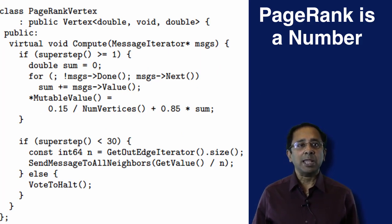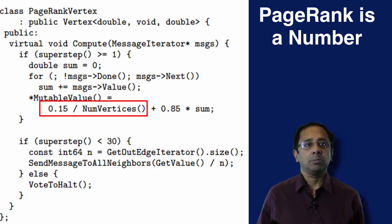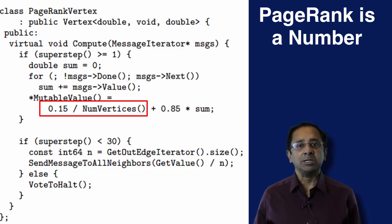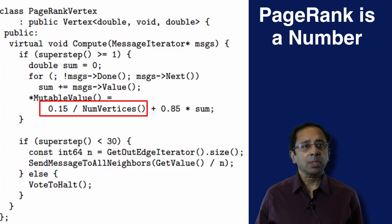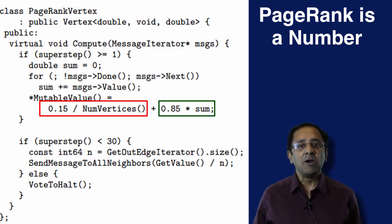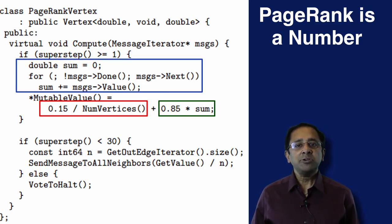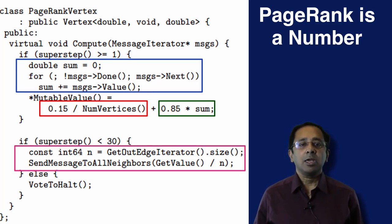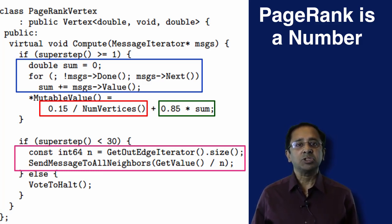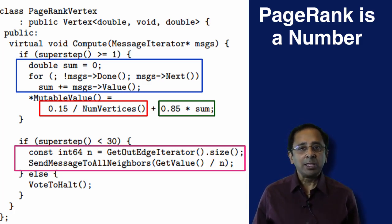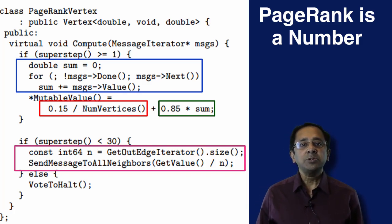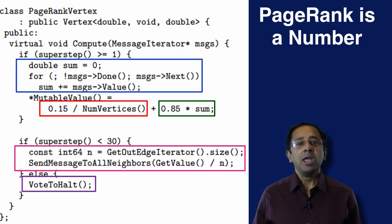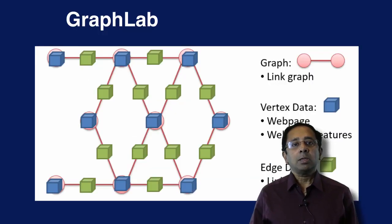A PageRank of a vertex is computed by adding two terms. The first term depends on the total number of vertices in the graph and is therefore the same every time. The second term depends on the PageRank of the neighbors, obtained from incoming messages. After computing its value, a vertex sends a message to its outgoing edges — the computed value divided by the number of outgoing edges — then halts and waits for the next super step.